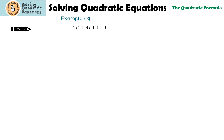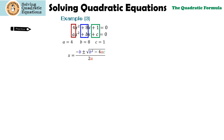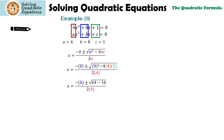I would like you to try this one. Pause the video, solve, and then press play to check. Our first step is to make sure that it's in standard form, and it is. a is 4, b is 8, and c is 1. The next step is to substitute a, b, and c. Then b squared is 64; negative 4 times 4 times 1 is negative 16.